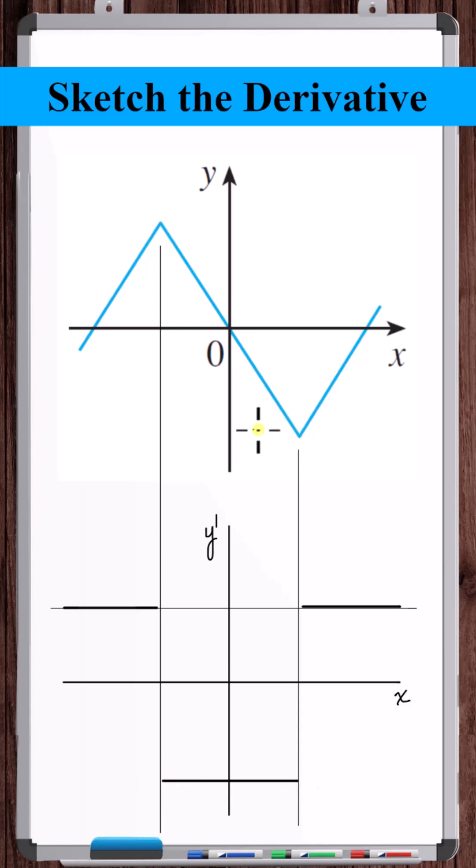At kink points, derivatives don't exist. So on the y prime graph, at the kink points, there's going to be open circles. The function doesn't exist. And that's the graph of the derivative.